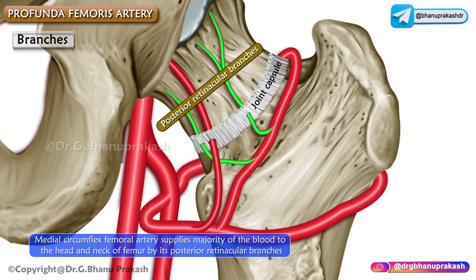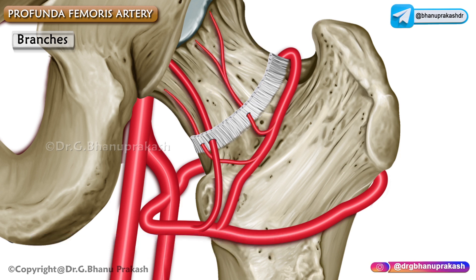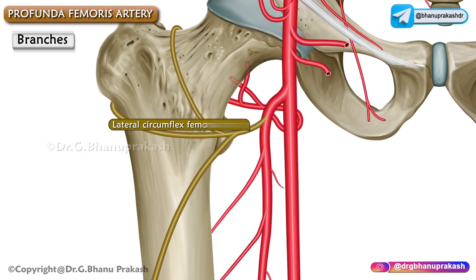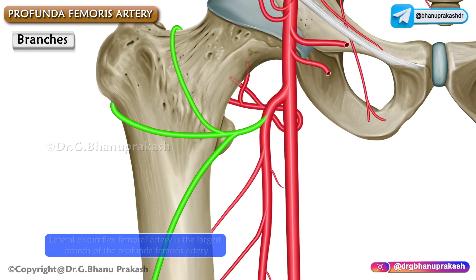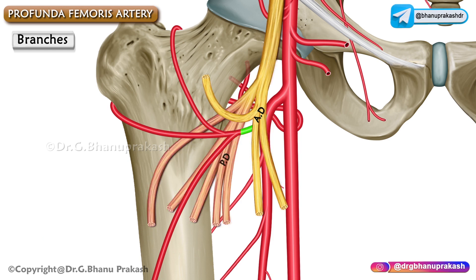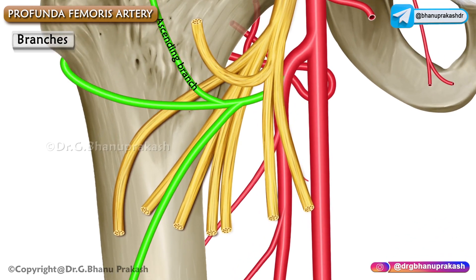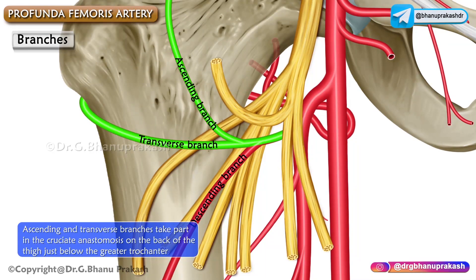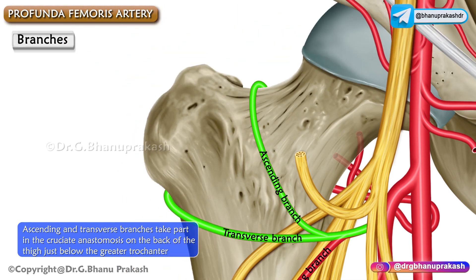The lateral circumflex femoral artery is the largest branch of the profunda femoris artery. As you can see in this image, it runs laterally between the anterior and posterior divisions of the femoral nerve and divides into ascending, transverse, and descending branches. The ascending and transverse branches take part in the cruciate anastomosis on the back of the thigh, just below the greater trochanter.